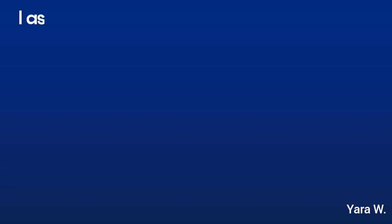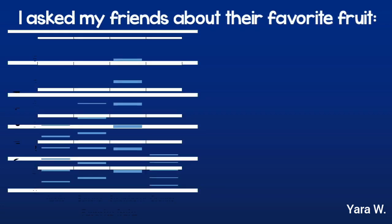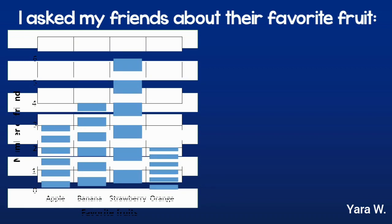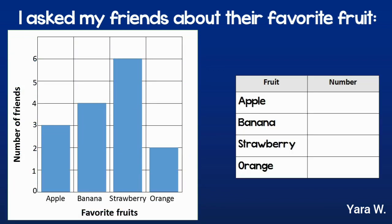Let's see this example. I asked my friends about their favorite food and I got this bar graph as an answer. Some people said they liked apples, some people said bananas, some strawberry and some orange.